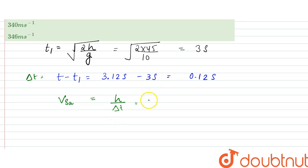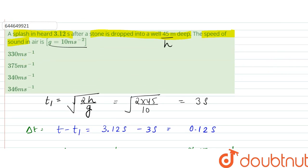That would be equal to 45 divided by 0.12, so this would be equal to 375 meter per second. So our answer would be option...